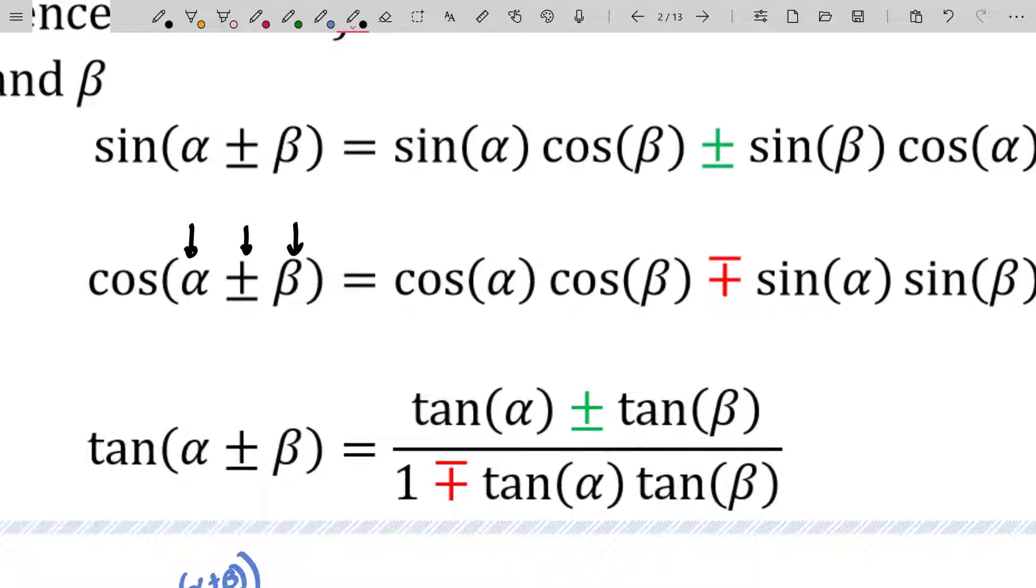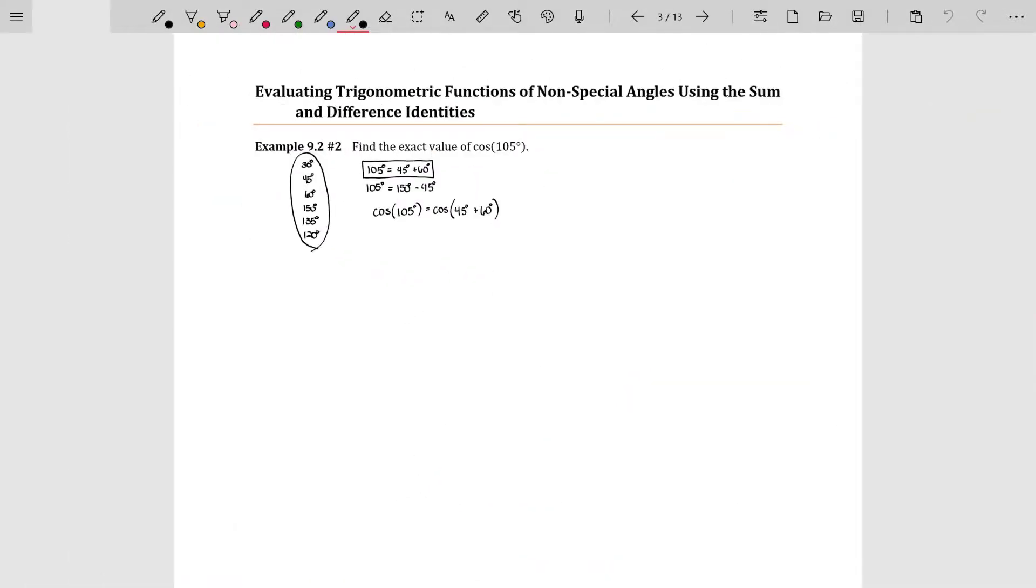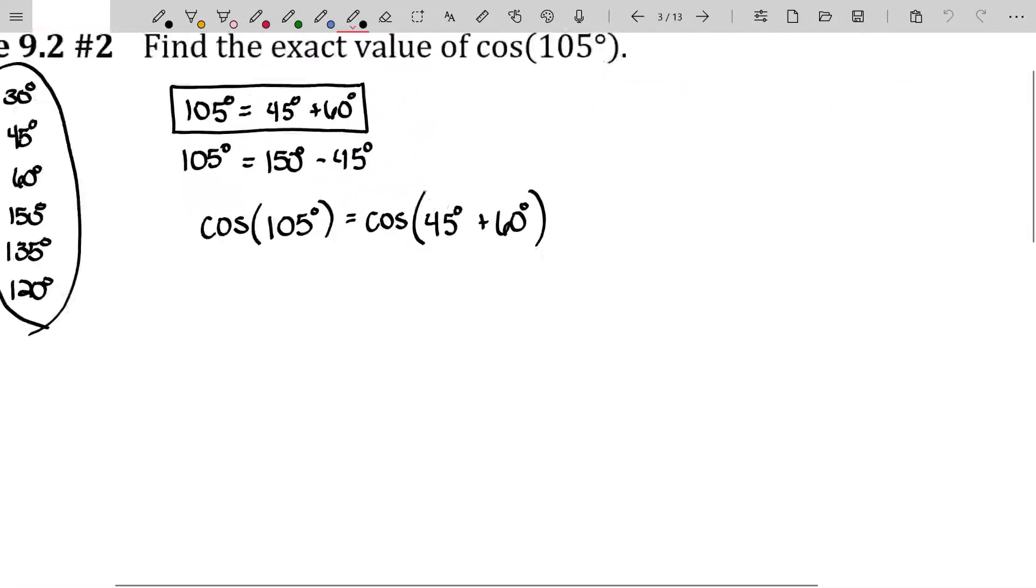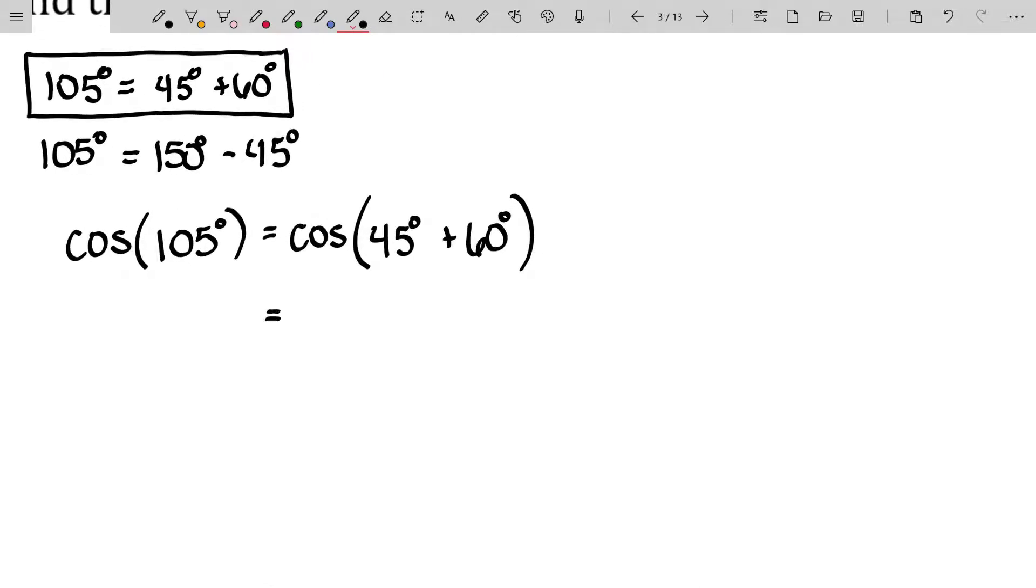All we need to do is insert the angles that we're working with. So going back to here, this will turn into the cosine of the first angle, 45 degrees, times the cosine of the second angle, 60 degrees, and then minus, because that was a plus, it's the opposite sign.